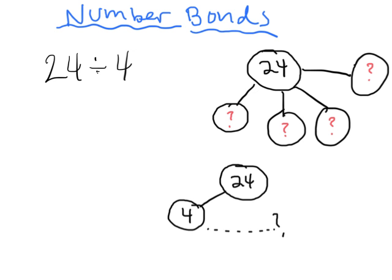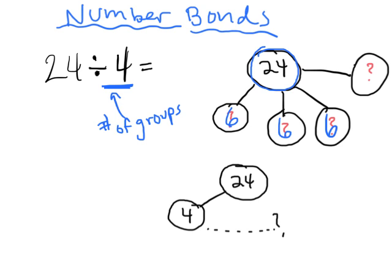So what does that mean? For example, if we have 24 divided by 4, we could draw a number bond like over here. This number bond starts with our 24, and in this case the 4 represents the number of groups. We need four groups, and as we do our investigation we'll discover that there are six in each group — so 24 divided by 4 equals 6.